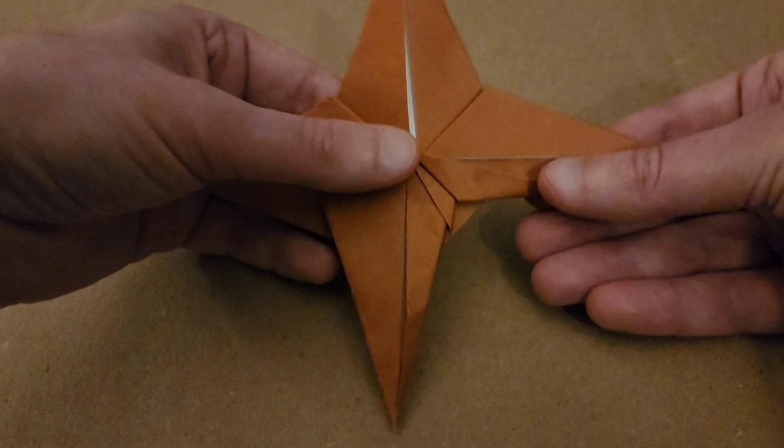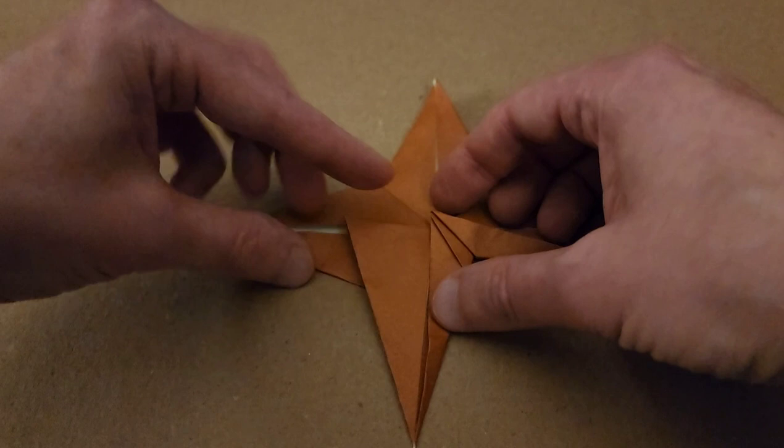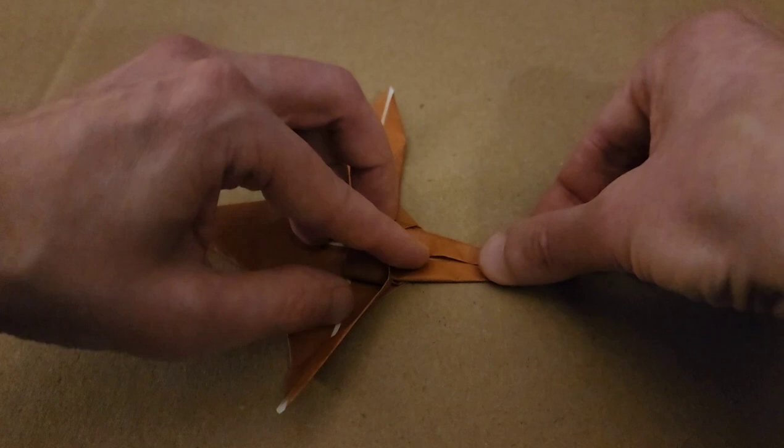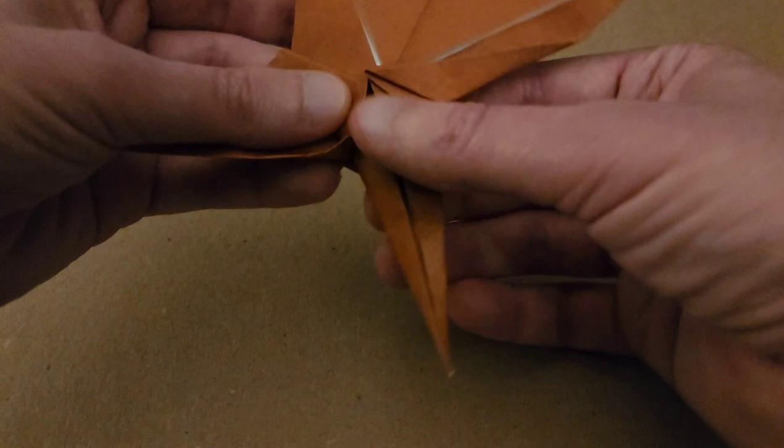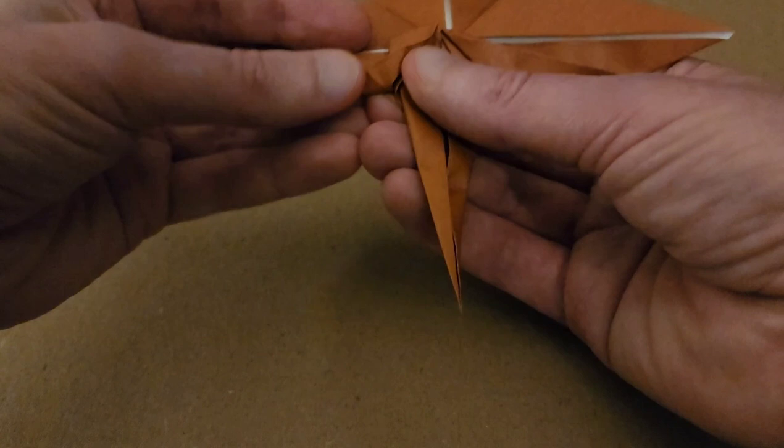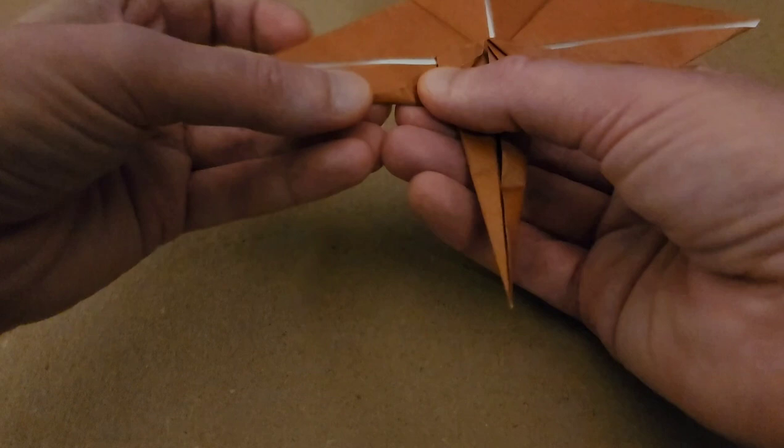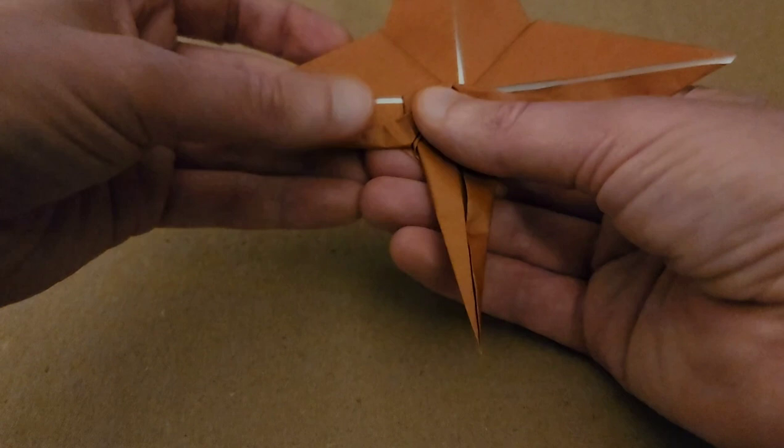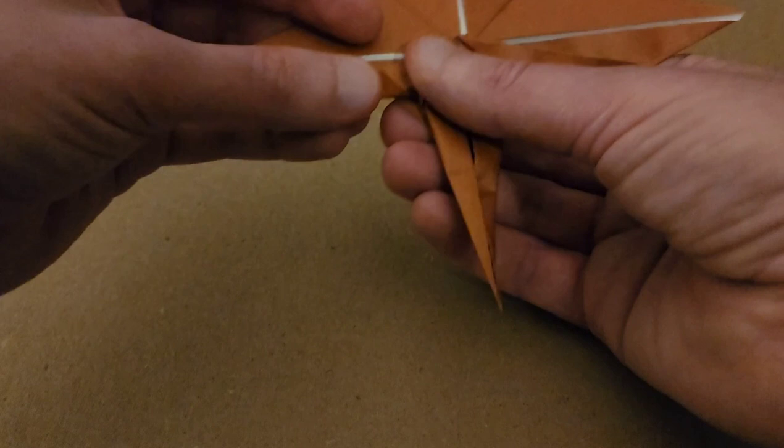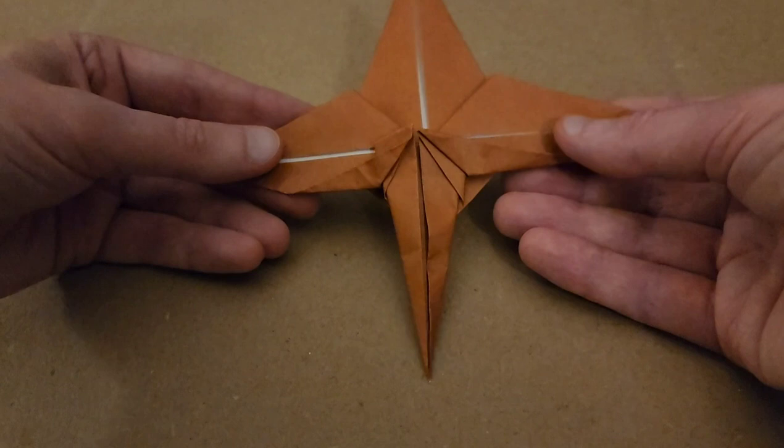And then, we do the same thing with the other side. So, again, it's this edge to the center. And sort of flatten it down. And try to make them symmetrical, if at all possible. That's not quite symmetrical. Let me keep trying and fiddling with it just a little bit more. Okay. So, he's going to fly a little bit lopsided, but that's okay.